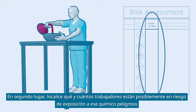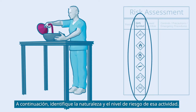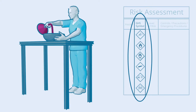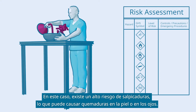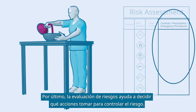Second, locate which and how many workers are possibly at risk of exposure to that hazardous chemical. Next, identify the nature and level of risk of that activity. In this case, there is a high risk of splashing, which may cause skin or eye burns. Finally, the risk assessment helps to decide what actions to take for controlling the risk.